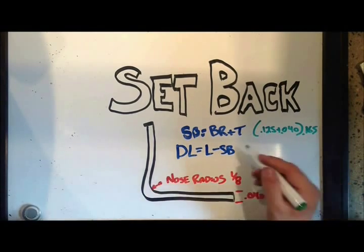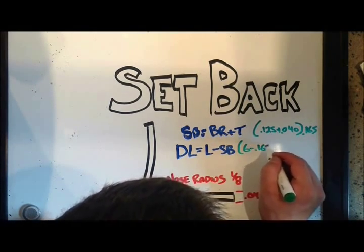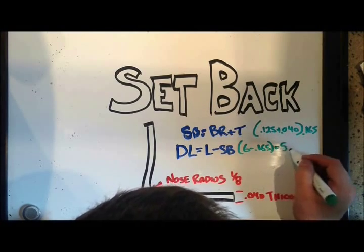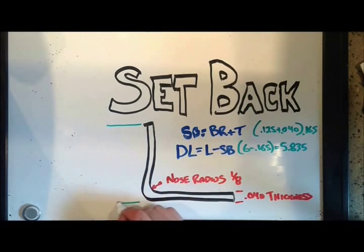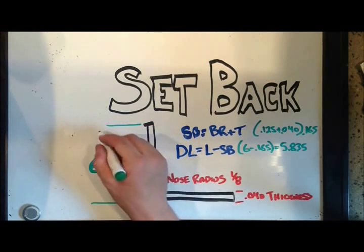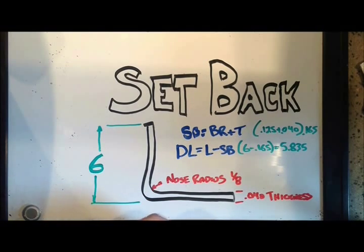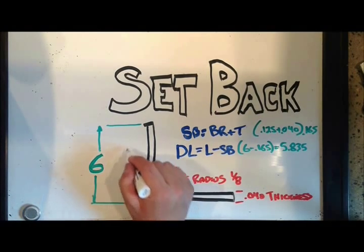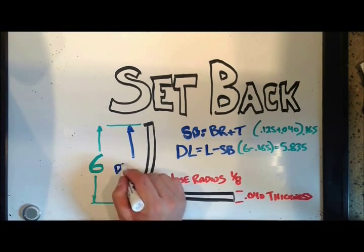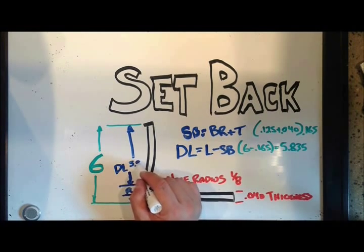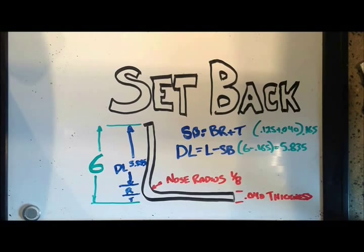So to find the developed length of one of the legs, we take the length that the drawing shows and we subtract setback. So in this case, it's six inches minus 0.165, which equals 5.875. So you can see here our original length was six inches. We take off the thickness of the material, we take off the radius of the bend, and what we're left with is the final developed length of 5.835.